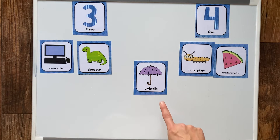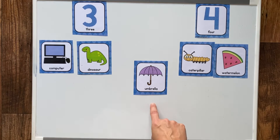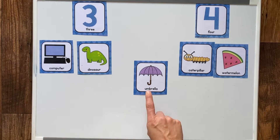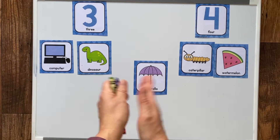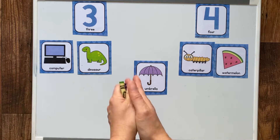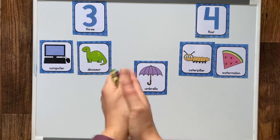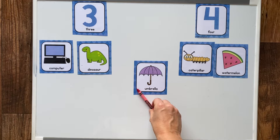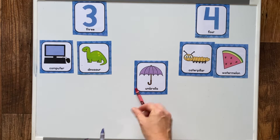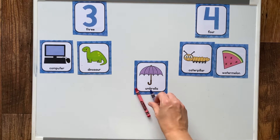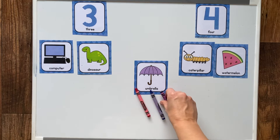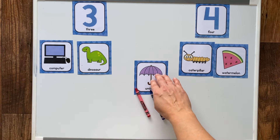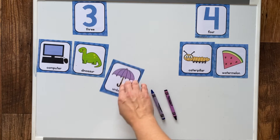Umbrella. Let's clap it. Umbrella. Umbrella. Now for our crayons. Umbrella. Three crayons, three syllables.